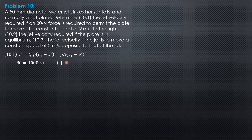So, 80 is equal to 1000 quantity 0.025 square V1 minus 2 positive 2 quantity square. So, 80 divided by quantity 1000 times 0.025 square, extract the square root, then plus 2. So, V1 velocity in the jet is 8.383 meters per second.